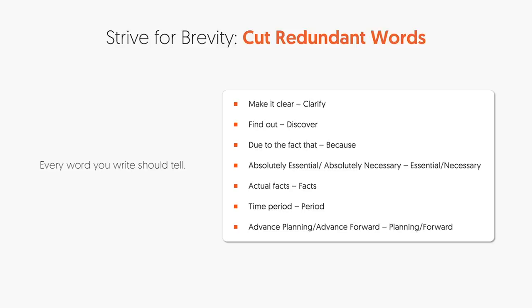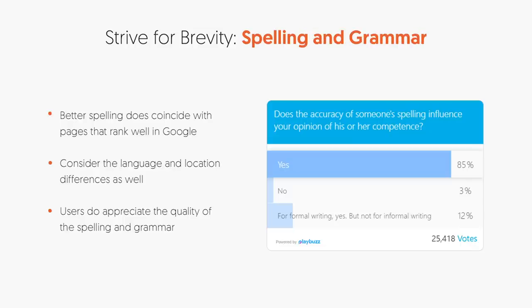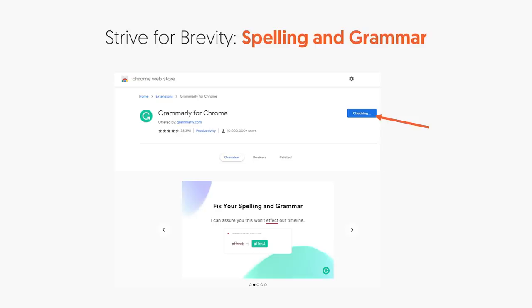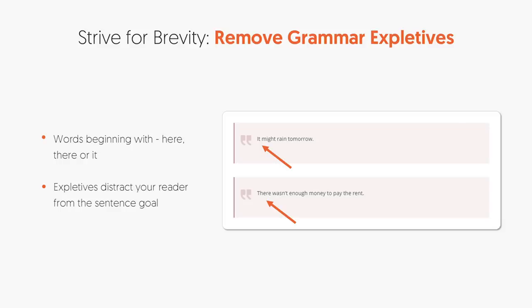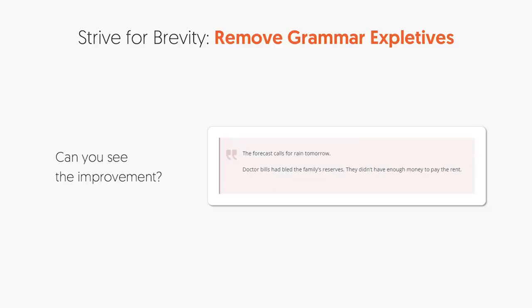You'll also want to delete redundant words — by deleting them, you'll get the point across quicker, and people like that. Make sure you also check for spelling and grammar errors; people don't like those. If you're terrible at spelling and grammar, don't worry — I am as well. I use a Chrome extension called Grammarly, and it corrects my spelling and grammar better than Google Docs or Microsoft Word does. It's amazing and it's free. Here's an example of a grammar issue: 'It might rain tomorrow' — you don't want to start a sentence with 'it.' A cleaner version is 'The forecast calls for rain tomorrow.' It's more decisive and data-driven.